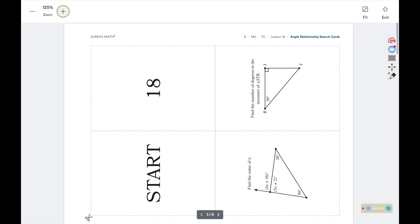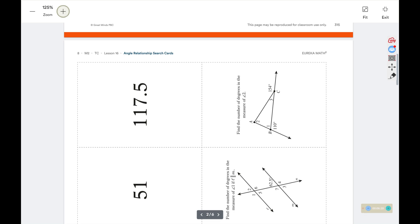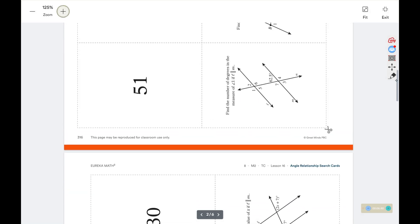And there's a card that has an answer with a 51 on it. And our next question is here. It says, find the number of degrees in the measure of angle one if L and M are parallel. So I know that this angle is a straight angle with this one here. So those need to add up to 180.